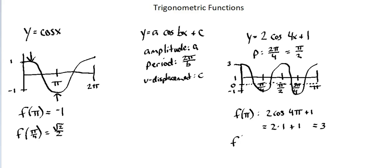Function of π over 4 is 2 times cosine of 4 times π over 4, plus 1. This is 2 times cosine of π, which is negative 1, plus 1. 2 times negative 1 is negative 2, plus 1 is negative 1. An input value of π over 4 results in an output value of negative 1.